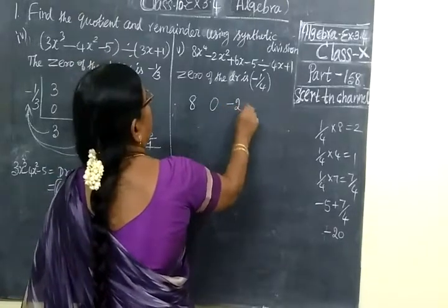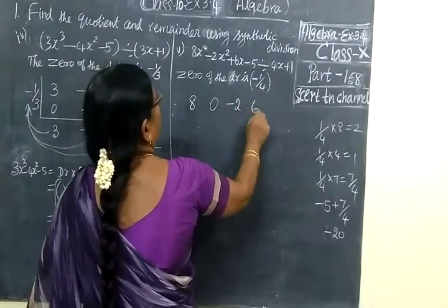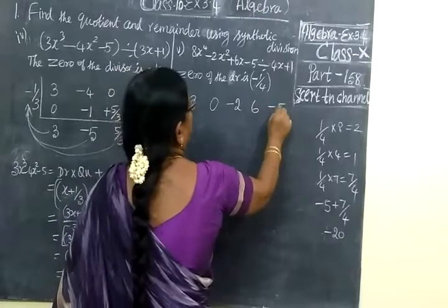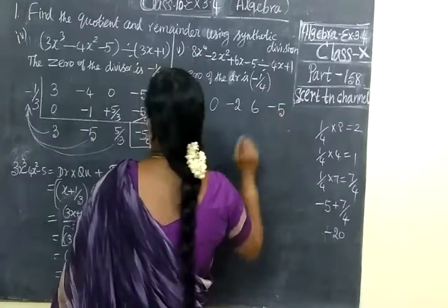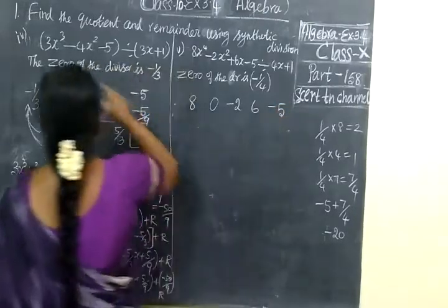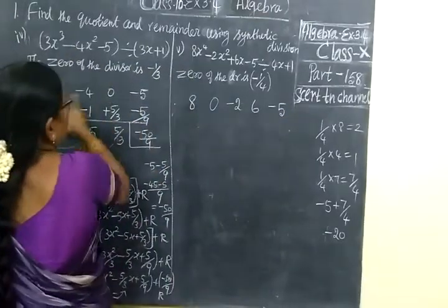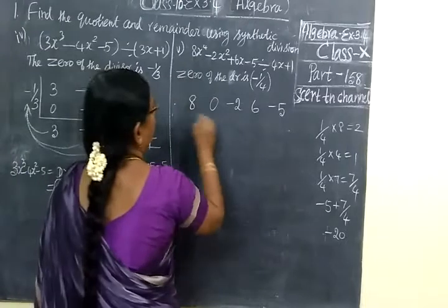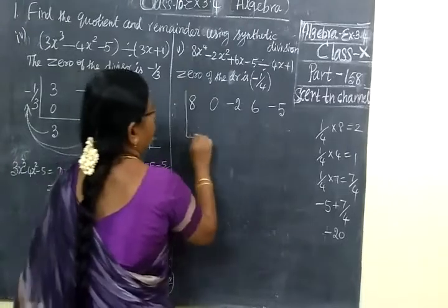Then x squared term, x term, then constant term. In this you will not have 4 terms — power 4 means 5 terms, which is different.